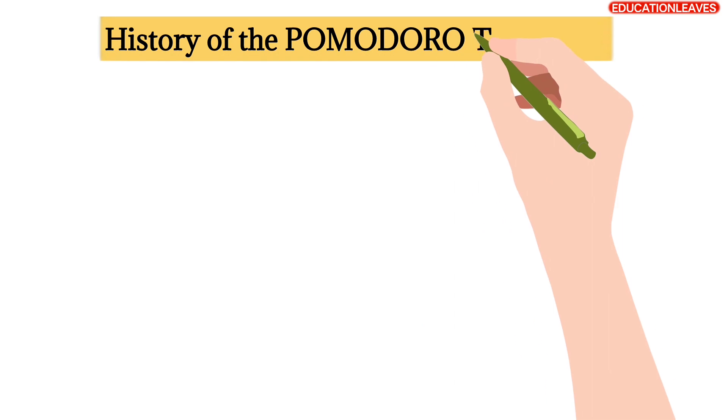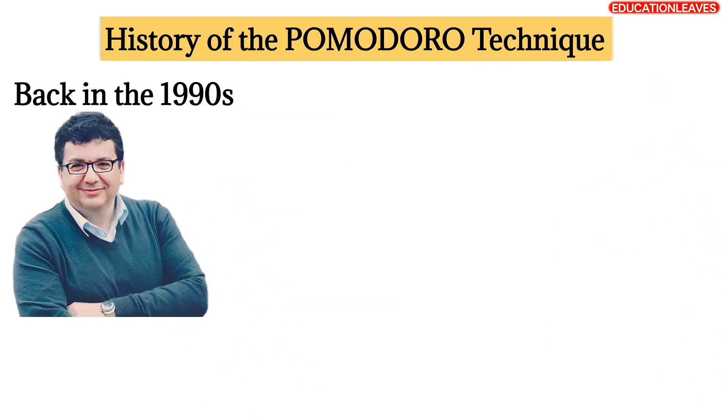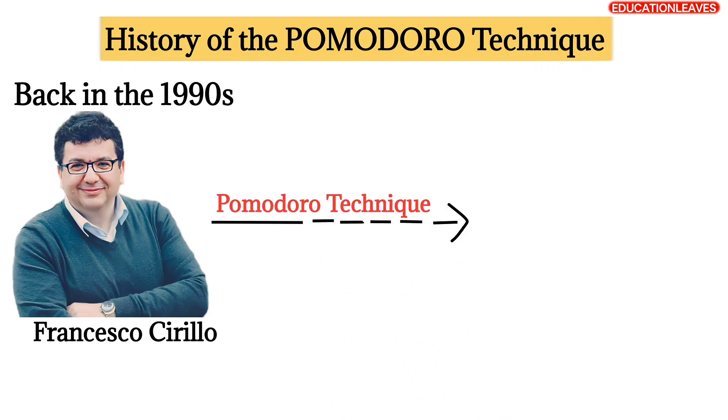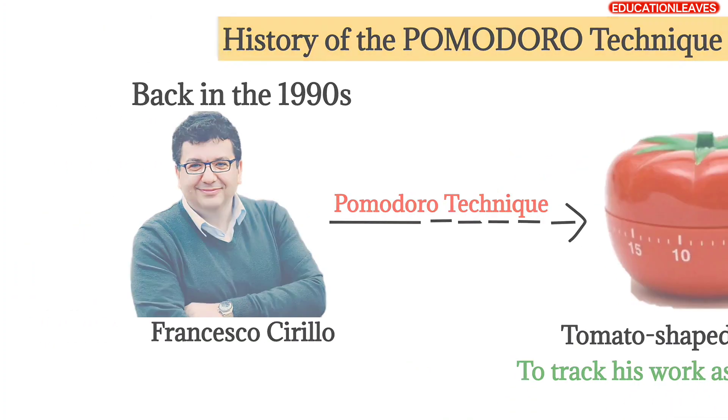Before getting into the topic, I would like to tell you a little about the history of the Pomodoro Technique. Back in the 1990s, a guy named Francesco Cirillo named this technique the Pomodoro Technique because he used a tomato-shaped timer to track his work as a university student.